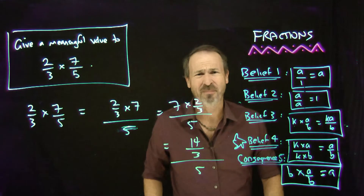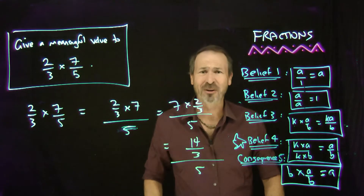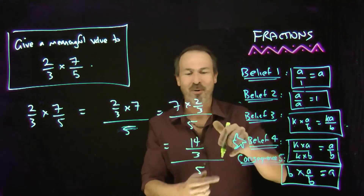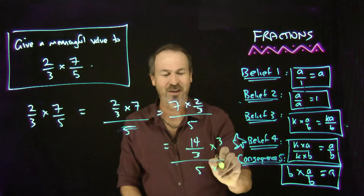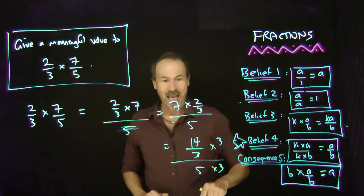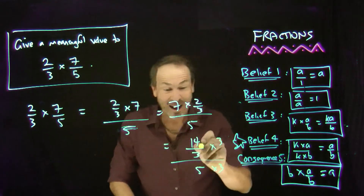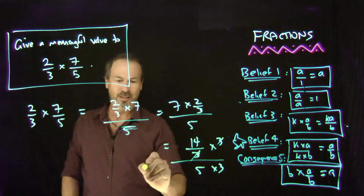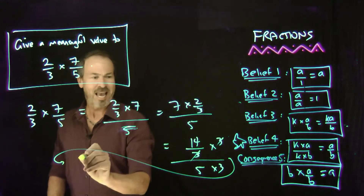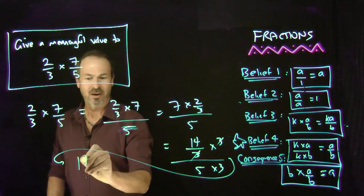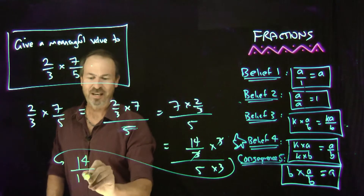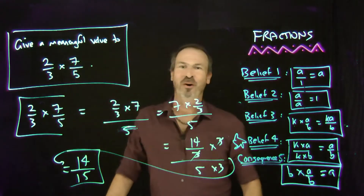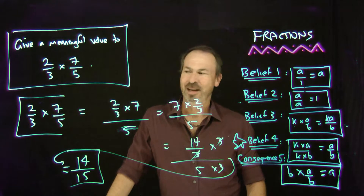I don't like thirds on the top — no one likes thirds on the top. How can I get rid of thirds on the top? Use belief number four: multiply top and bottom by three. That changes nothing, but then I see that really cancels. What I really have now is 14 on the top and 15 on the bottom. Equals 14 fifteenths. Beautiful.